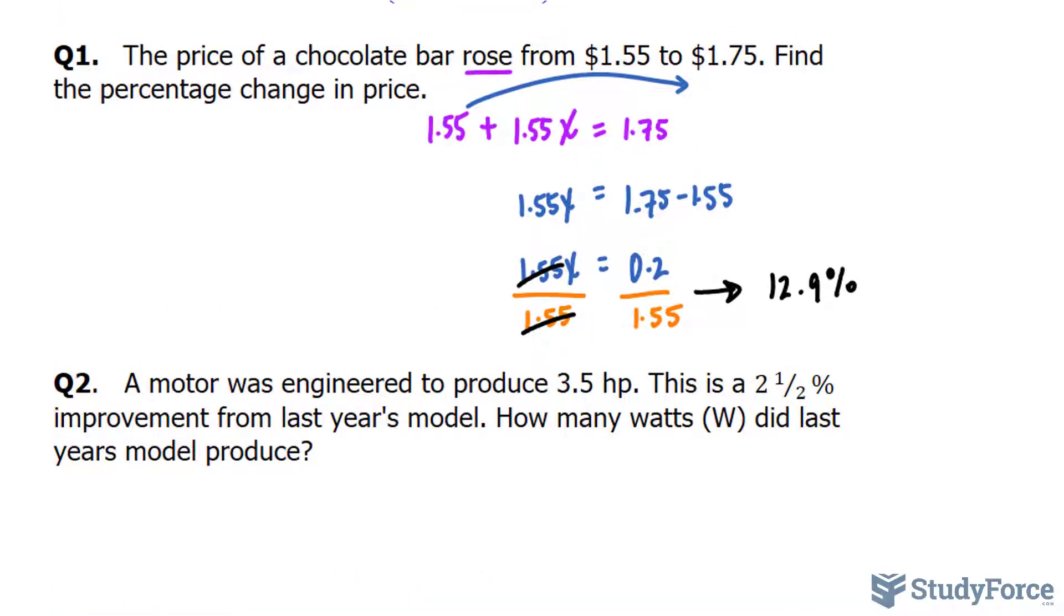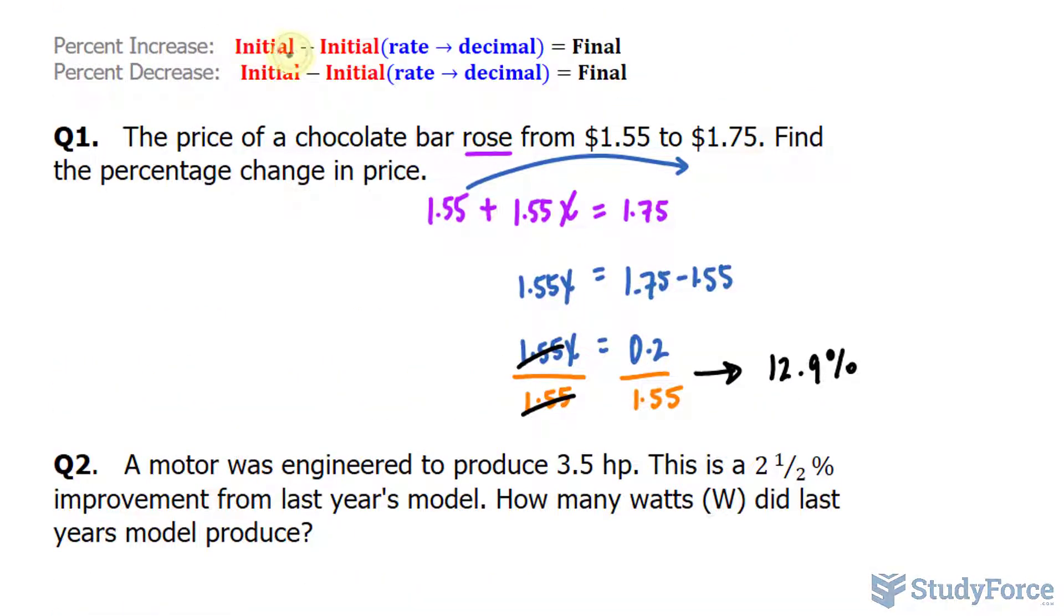That being said, we don't know the initial. We don't know that part of the formula. So, we'll write down x. And again, initial appears a second time, so we'll replace that with x. We do know the rate, and it is 2.5.